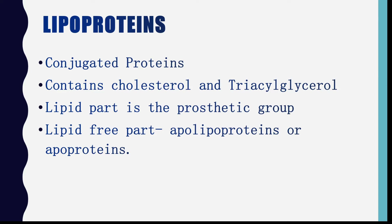Lipoprotein is a conjugated protein composed of lipids. These lipids include triglyceride, cholesterol, cholesterol ester and phospholipids. It will also have specific proteins called apolipoproteins. The lipid portion is called the prosthetic group and the lipid-free part is the apoprotein or apolipoprotein.